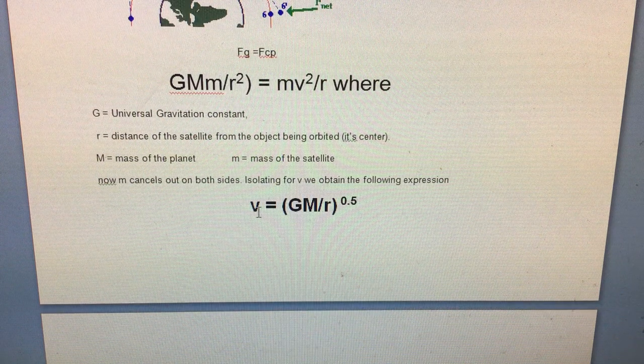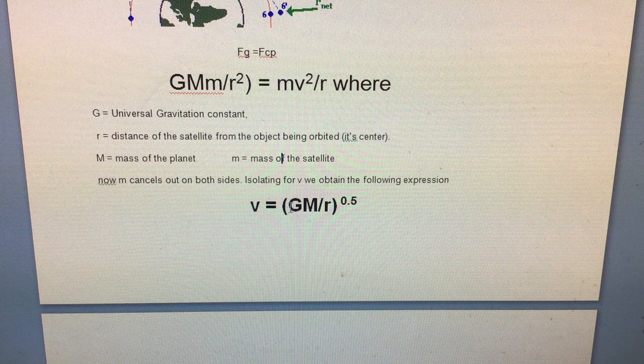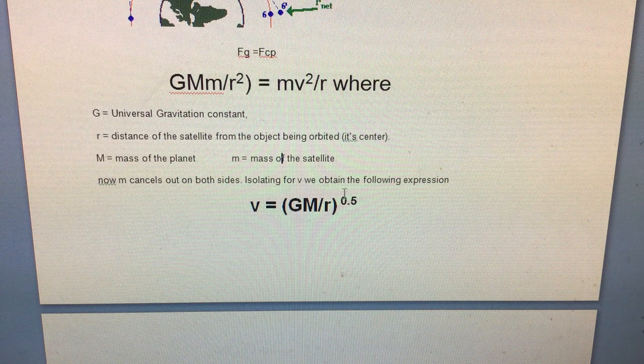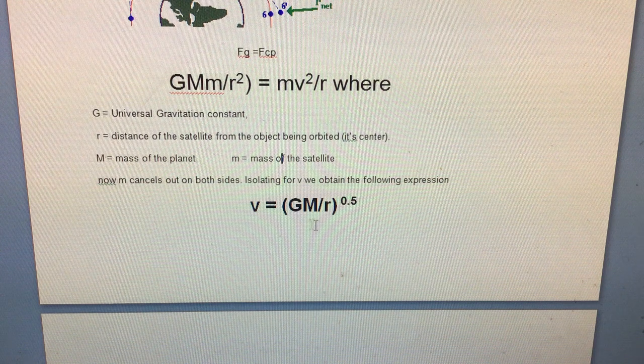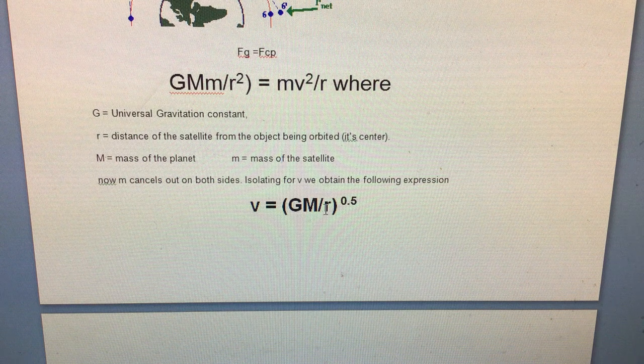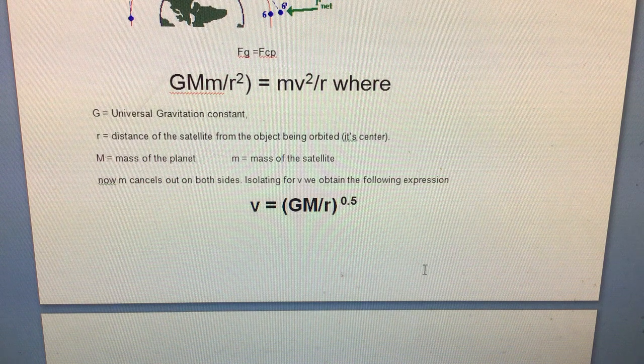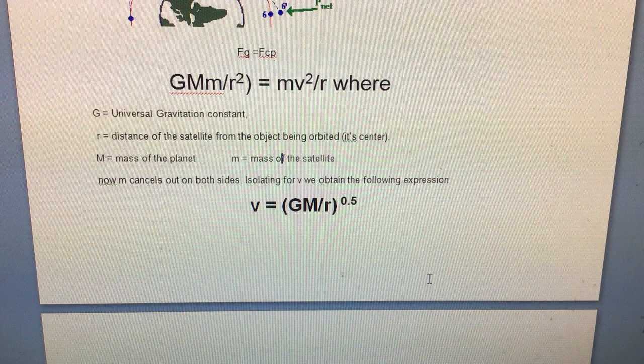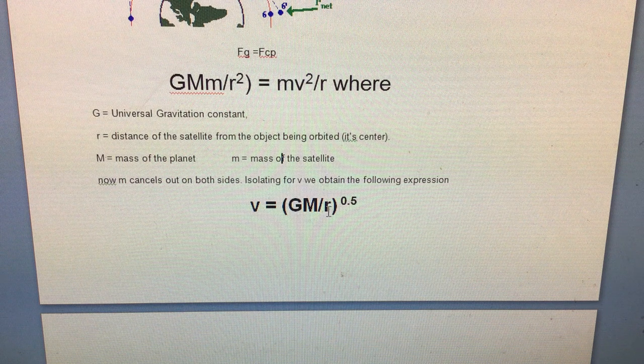So you can see that this comes down to v equals the square root - that's what raising something to the 0.5 is - of big G times M, the mass of the planet, divided by r, the radius of orbit.